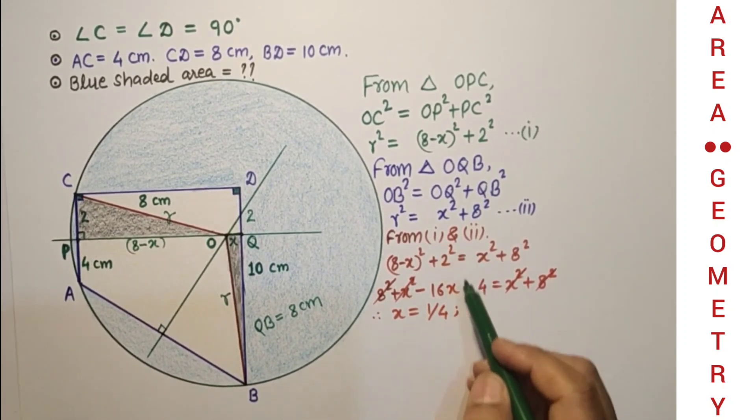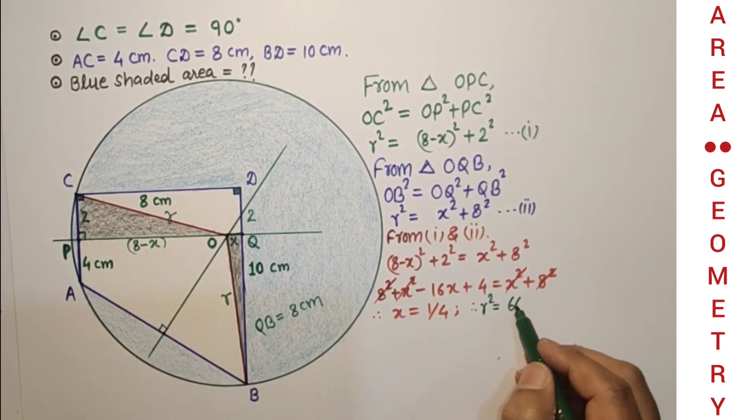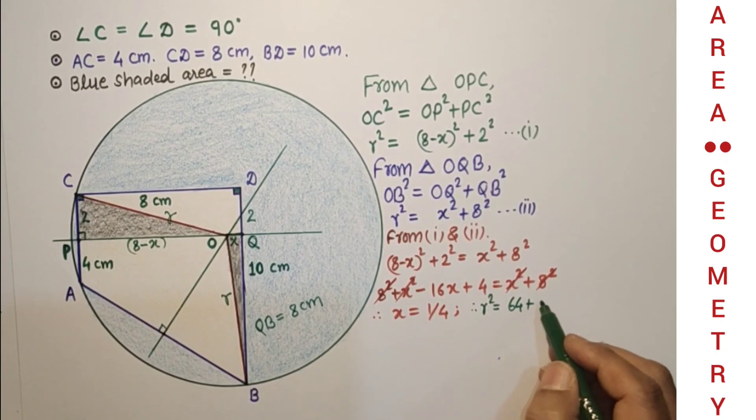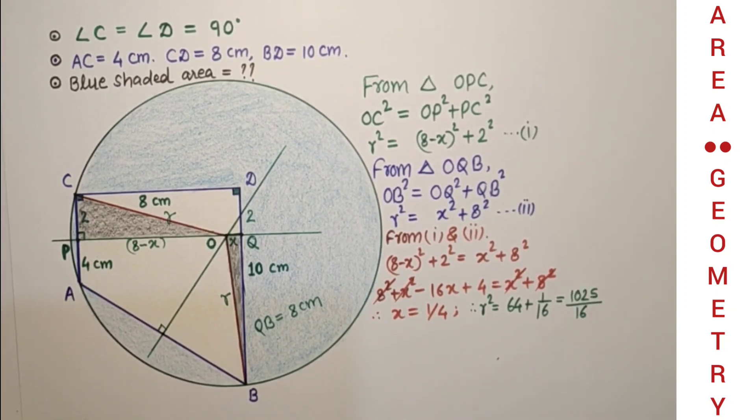So if X is 1/4, therefore R² will be 64 plus 1/16, that is equal to 1025/16.